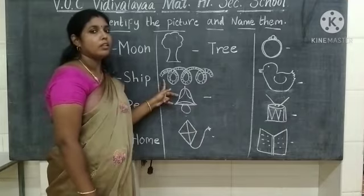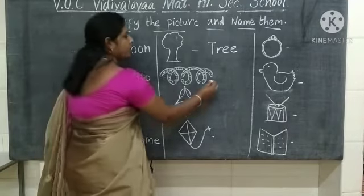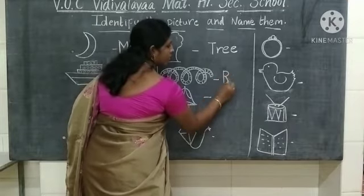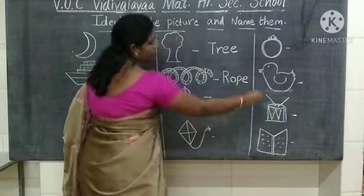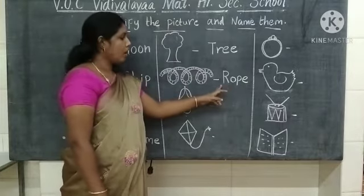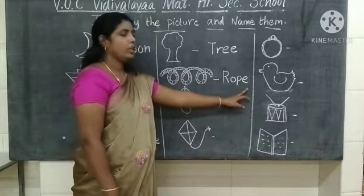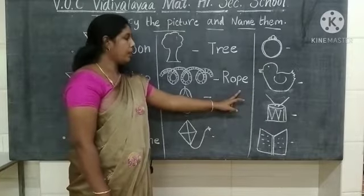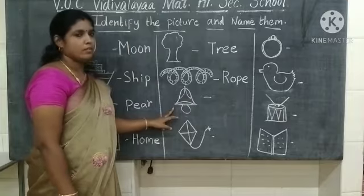What picture is this? This is a rope. What is the spelling of rope? R-O-P-E — rope. What is the spelling of rope? R-O-P-E — rope.